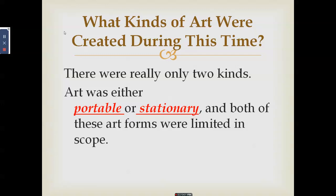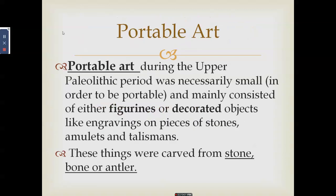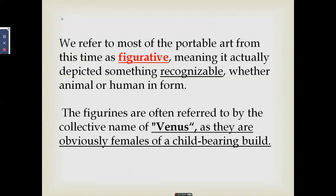Art at this time was either portable or stationary, and both types were limited in scope. Portable art — from the word itself — could be carried around, so art forms were necessarily small. These consisted of figurines or decorated objects like engravings on pieces of stone, amulets, and talismans. These items were carved from stone, bone, or antler — the horns of an adult deer.